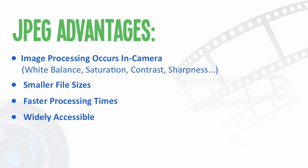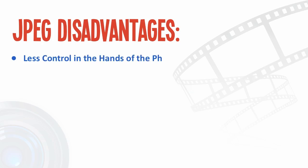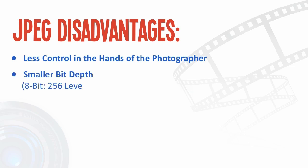Whilst all this sounds great, shooting in JPEG has limitations and disadvantages that can dramatically affect the quality of your photographs. The primary disadvantage is that it yields less control in the hands of the photographer, though some photographers may prefer this, especially if their work revolves around repetition and speed. Comparing the two formats, JPEGs processed in-camera have a smaller bit depth — they're converted to 8 bits, not fully utilising the camera sensor's capabilities. 8-bit files have only 256 levels of tonal information, from 0 to 255, and are therefore sacrificing a large amount of detail.